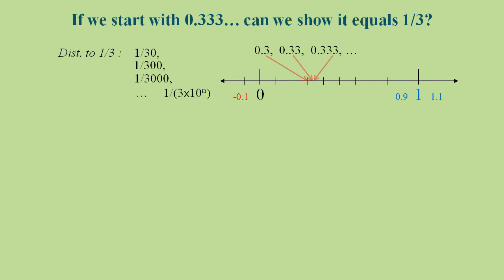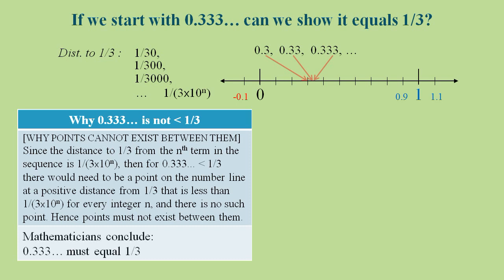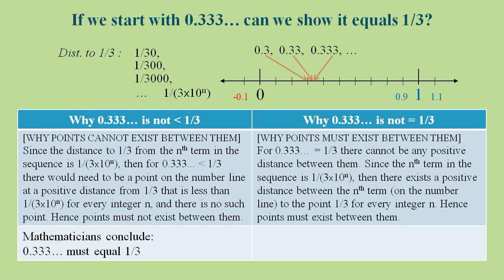This disappearing act can supposedly be demonstrated on the number line. After n decimal places, the distance to 1 third is 1 over 3 times 10 to the power n. Then if we assume an actual infinity of digits is possible, then no points can exist on the number line between 0.3 recurring and 1 third. If there are no points between them, they must be the same value. But we can flip the argument around and say there is a positive distance between 1 third and any given number of decimal places, and this holds for all infinitely many of the decimal places.